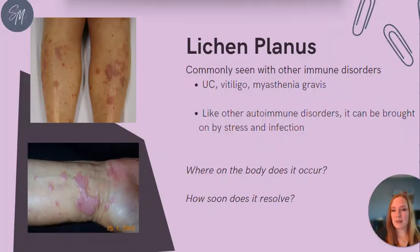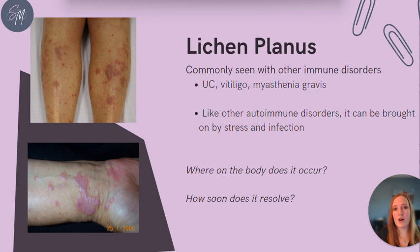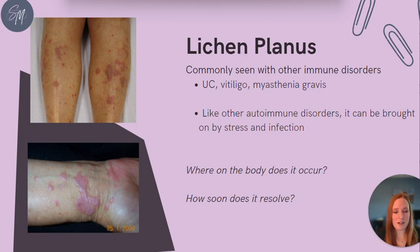Lichen planus is an inflammatory skin condition commonly seen with other immune disorders, such as ulcerative colitis, vitiligo, and myasthenia gravis. Like other immune disorders, it can be exacerbated by stress and infection.